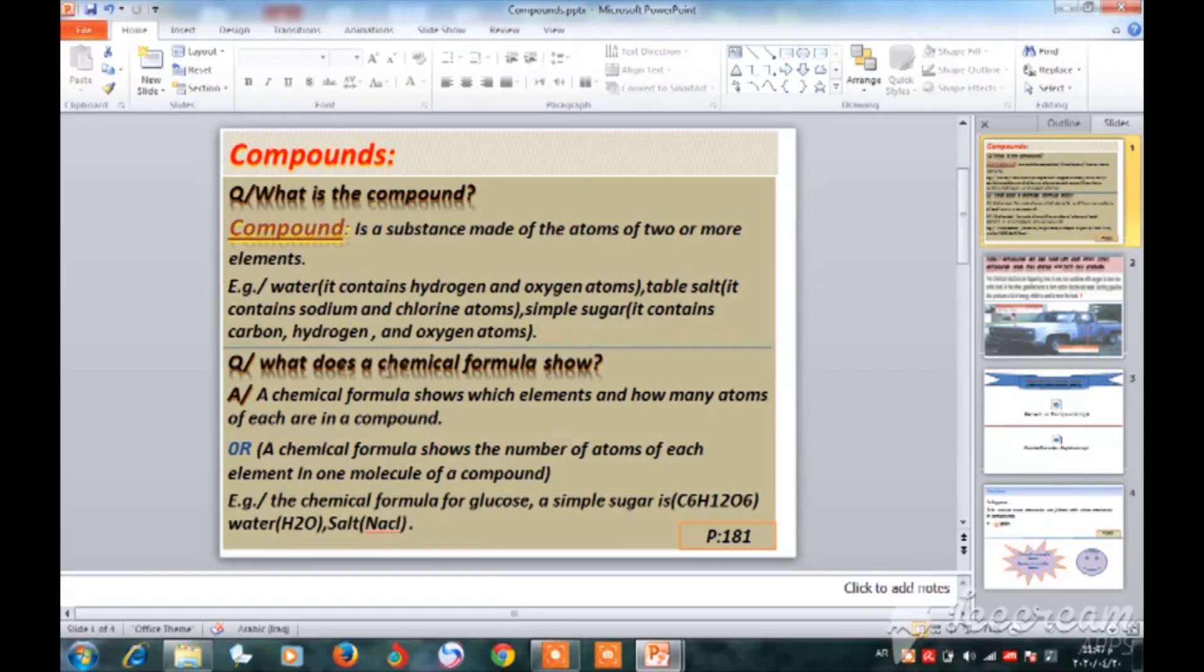Question: what does a chemical formula show? There are two answers. Answer one: a chemical formula shows which elements and how many atoms of each are in a compound.